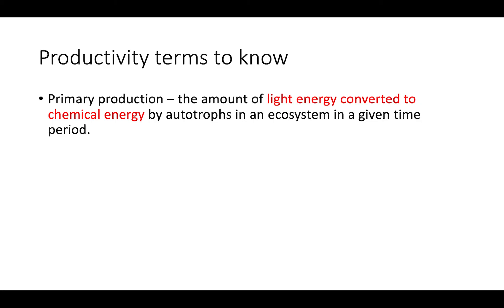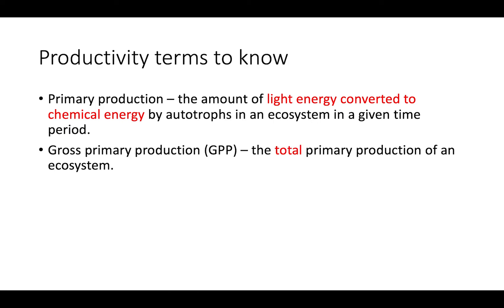Primary production is the amount of light energy that is converted to chemical energy by autotrophs in an ecosystem during any given time period — the amount of energy coming from the sun that autotrophs, such as phytoplankton and plants, are able to take up and convert into chemical energy.